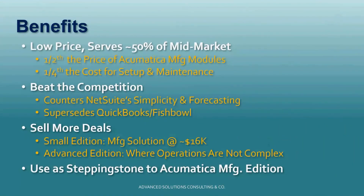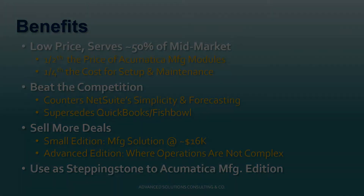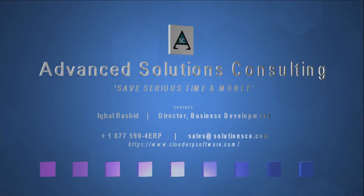In conclusion, FlexMFG positions Acumatica to serve a larger share of the manufacturing market. It helps beat the competition because it compares favorably to NetSuite's simplicity and forecasting tool and supersedes QuickBooks assembly function or Fishbowl bolt-on. This allows us to sell more deals, starting with a 16K solution using Acumatica Small Edition, at a much more affordable price for larger companies that don't need ERP complexity, or where FlexMFG can act as a stepping stone to the manufacturing edition.